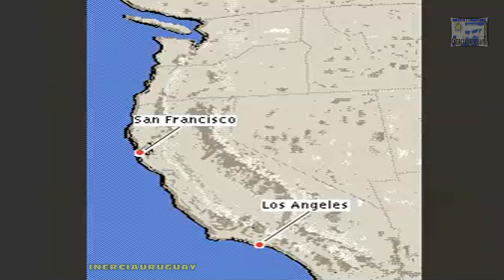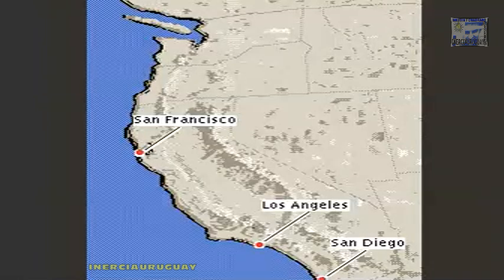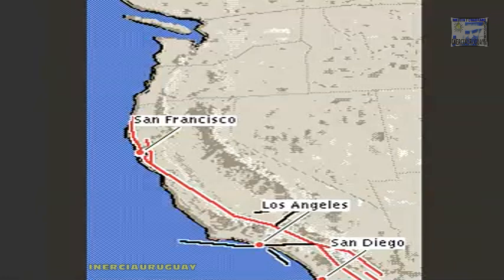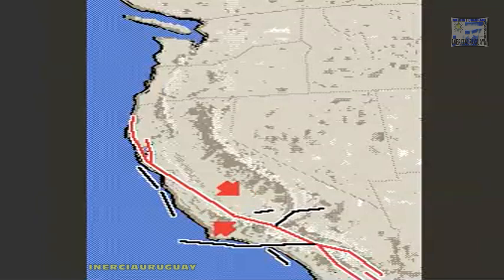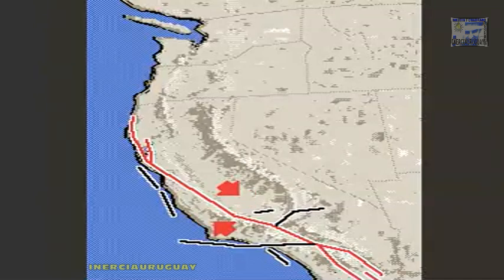A fault is a fracture in the Earth's crust, characterized by an uneven crack that may run for many kilometers. The two sides of the fault line are actually two gigantic moving sections or plates of the Earth's crust. The crack in the Earth is created because one plate is moving relative to the other.